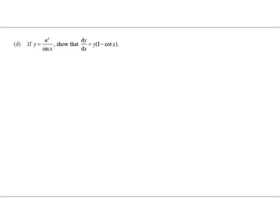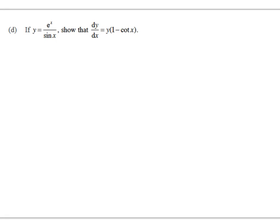So this is the first one, and this is not bad at all. We're told that y is equal to this expression here, and we're asked to show that dy/dx is equal to y times 1 minus cot x. We don't need to freak out about it, we just go ahead and differentiate.